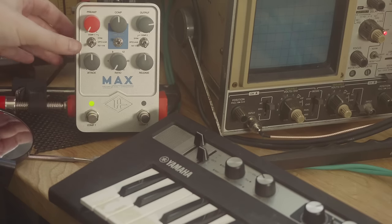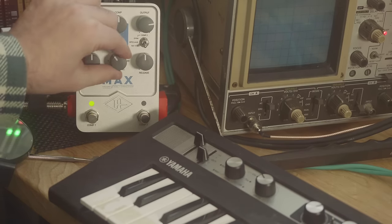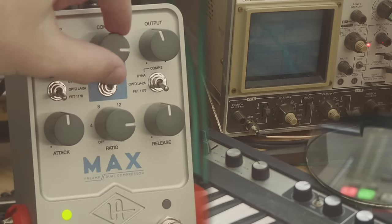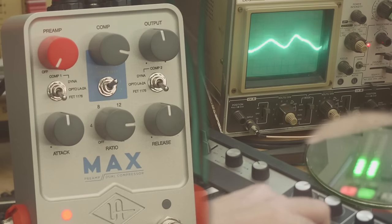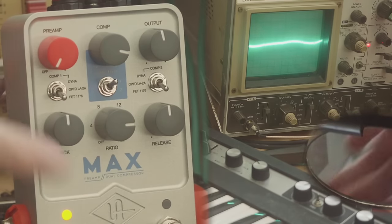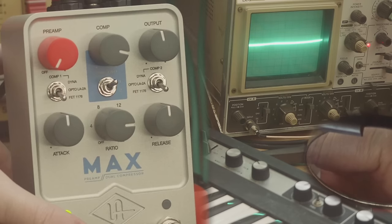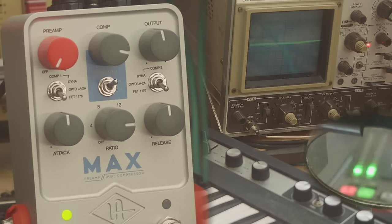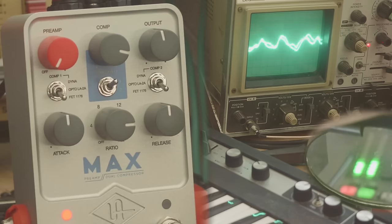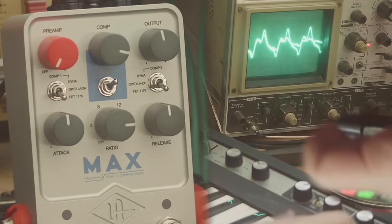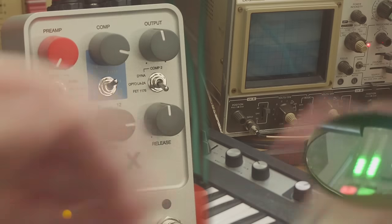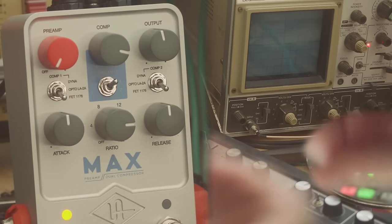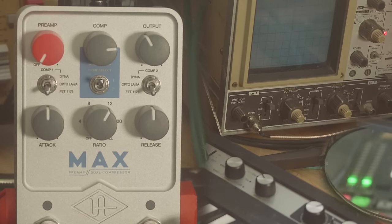I'm going to use just an 1176 model for a lot of the demonstration. I've got a pretty high comp and a pretty high ratio. Let's switch this on and off. It's making the quiet bits louder and the loud bits quieter. That's what compressors do. They level out your dynamics.